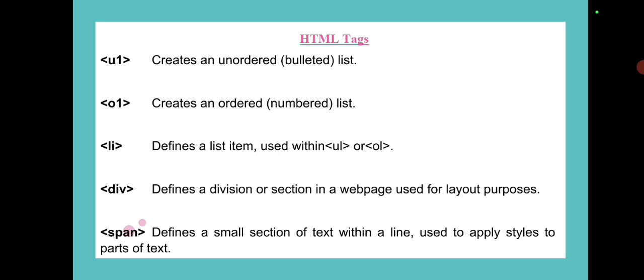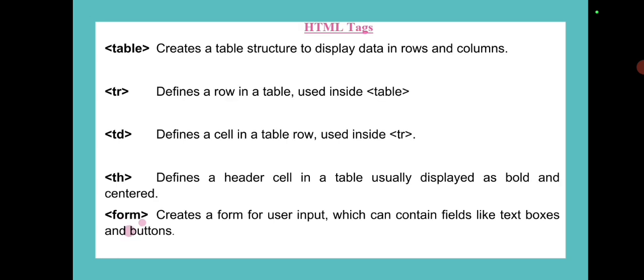The div tag defines a division or section in a web page, used for layout purposes. The span tag defines a small section of text within a line, used to apply styles to parts of text. The table tag creates a table structure to display data in rows and columns. tr defines a row in a table, and td defines table data.